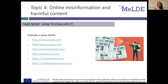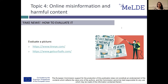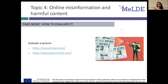Fake news includes articles that are intentionally and verifiably false and could mislead readers. In order to evaluate a news article, you can search on websites like Google, Snopes.com, FastCheck.org, LeadStories.com, TruthOrFiction.com, and MediaBiasFastCheck.com to find out if the story has already been shown as false. You can also evaluate if a picture is fake news by searching on the TinyEye.com website or on GetSurface.com.